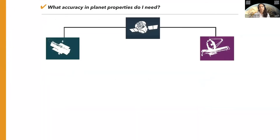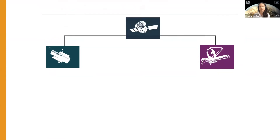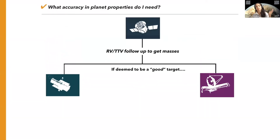First up in target selection: how well do you need to know your planets before you go and observe them? We all know there's this tension that exists between detection of a new planet and then atmospheric follow-up observations with either HST or JWST. We'd of course want this pipeline to be seamless, but in reality we have to get the mass first, and then, and only then, if the target is deemed to be a good one, can we proceed with more in-depth atmospheric follow-up.